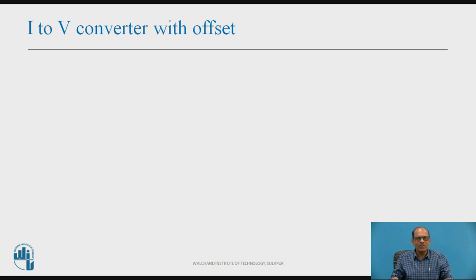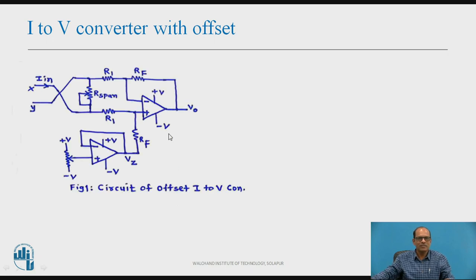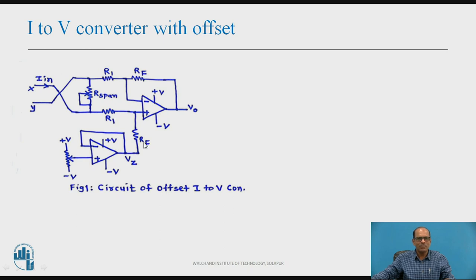First is I-to-V converter with offset. The figure shows the circuit for I-to-V converter with offset. Two operational amplifiers are used; the lower operational amplifier is used as a buffer. Input is applied at the non-inverting terminal, which is derived from a dual power supply and a potentiometer as shown in the figure. Output of the buffer is V-Z. That goes to the I-to-V converter circuit. Input is I-in, and the resistances are R1, Rf, R1, Rf as shown in figure.